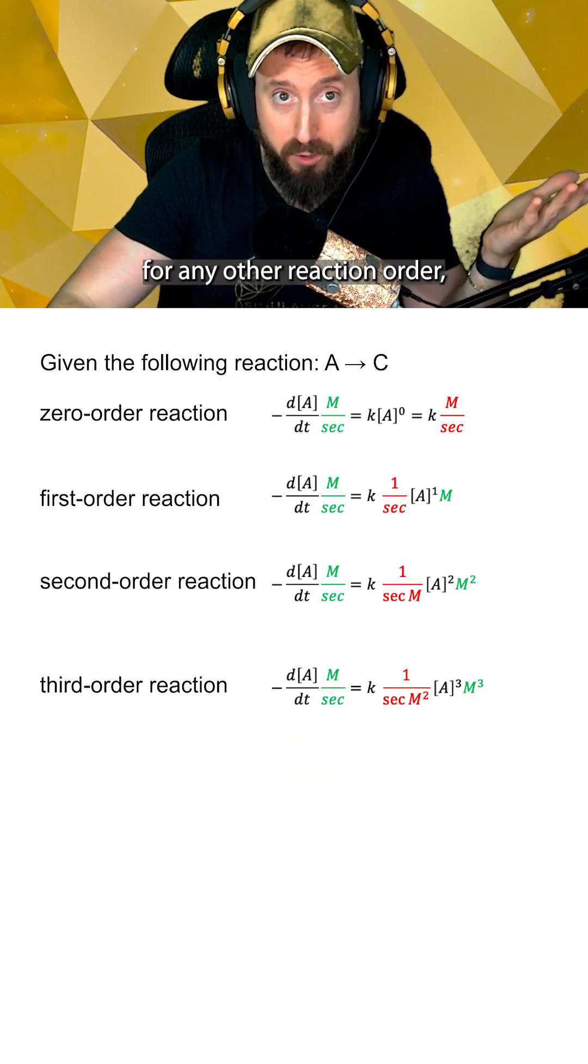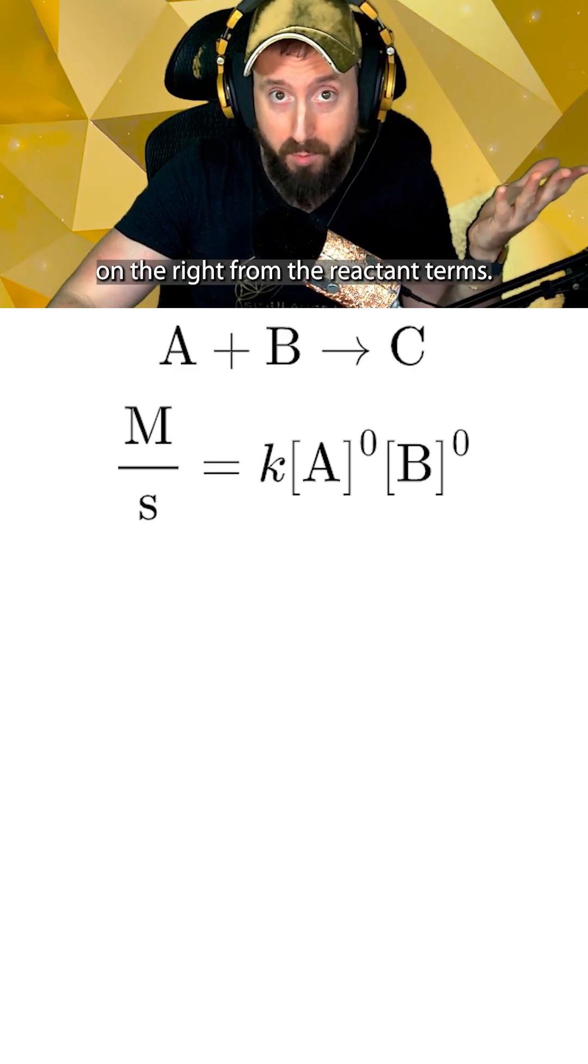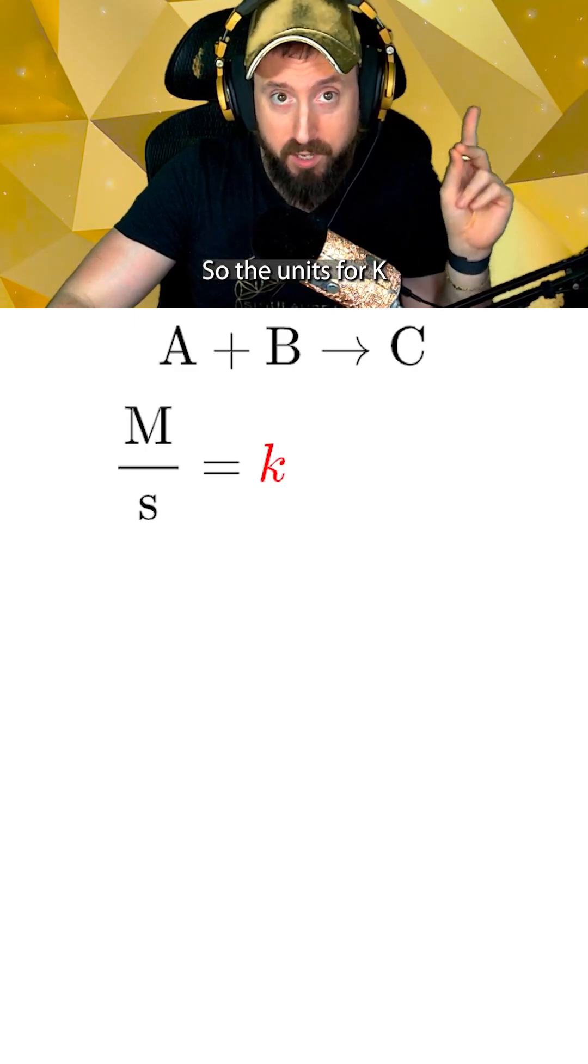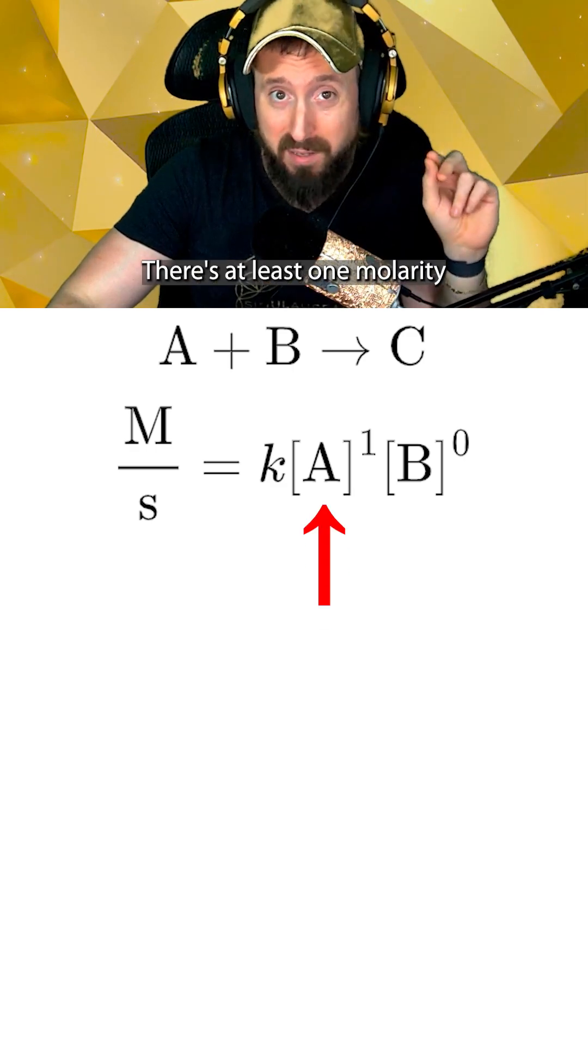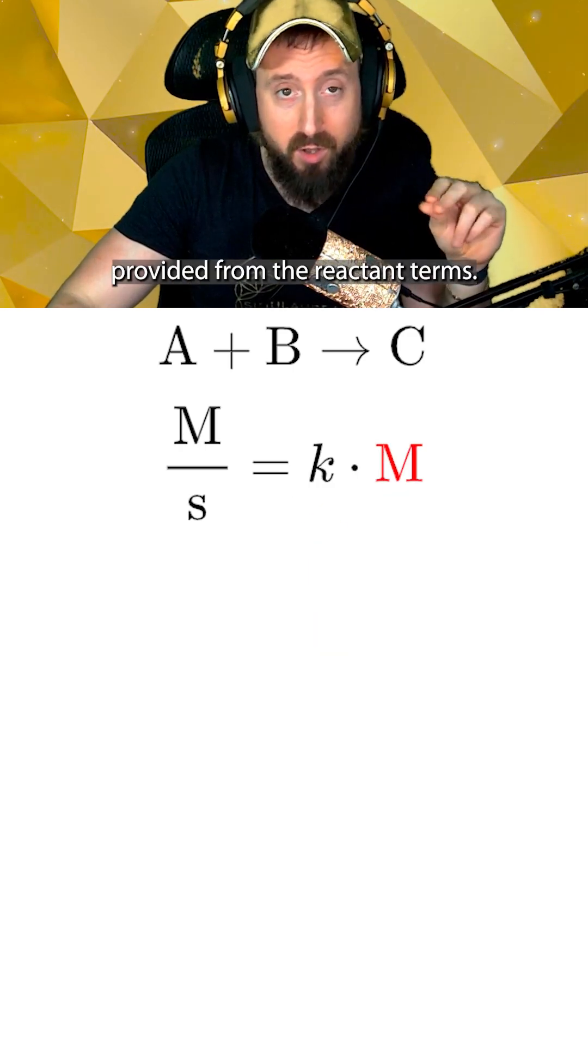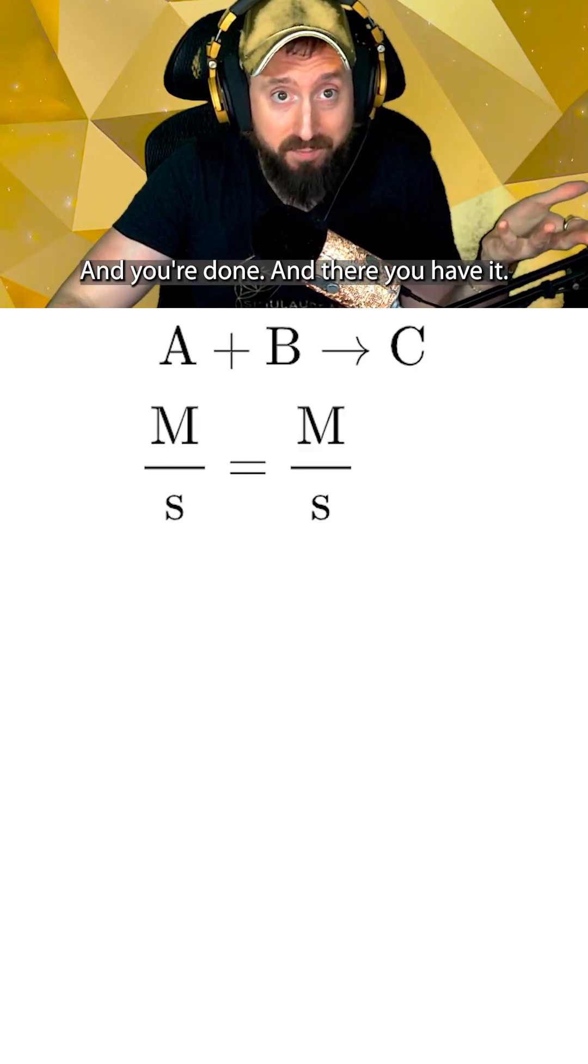It also works for any other reaction order, such as a zeroth order reaction, where there are no units on the right from the reactant terms, so the units for K just have to be molar over seconds. For a first order reaction, there's at least one molarity provided from the reactant terms, so all K needs to be is one over seconds, which gets you molar over seconds.